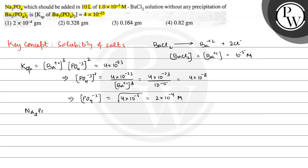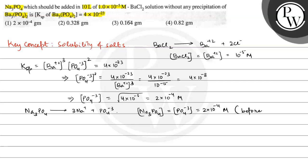We also know that Na3PO4 dissociates in solution as: Na3PO4 → 3Na⁺ + PO₄³⁻. So the concentration of Na3PO4 equals the concentration of PO₄³⁻ ions, which is 2×10⁻⁴ molar before precipitation.